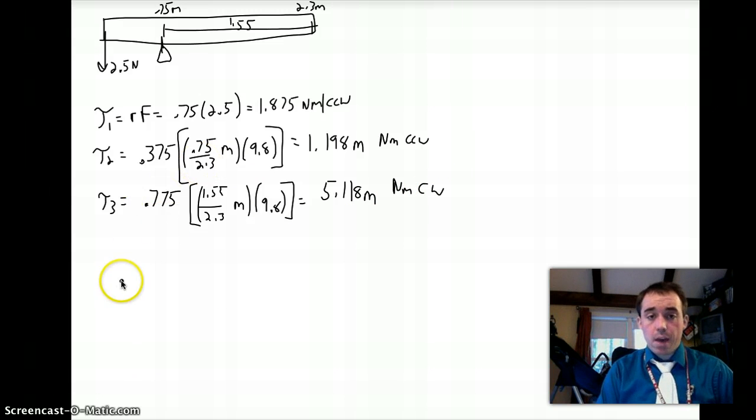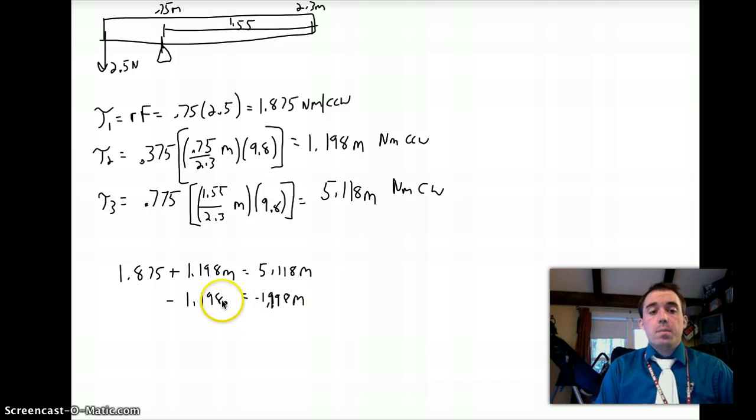All right, so I want to set up my equation. My two counterclockwise torques get added on the same side, 1.875 plus 1.198 M equals 5.118 M. Subtract the 1.198 M from both sides. So that goes away, you'll have 1.875 equals 5.118 minus 1.198, 3.92, 3.92 M.